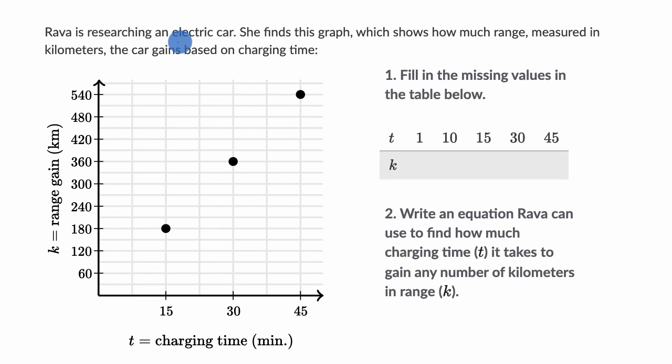We're told Rava is researching an electric car. She finds this graph which shows how much range, measured in kilometers, the car gains based on charging time.